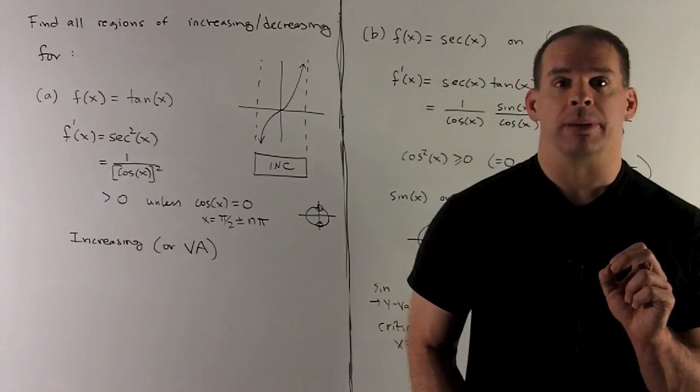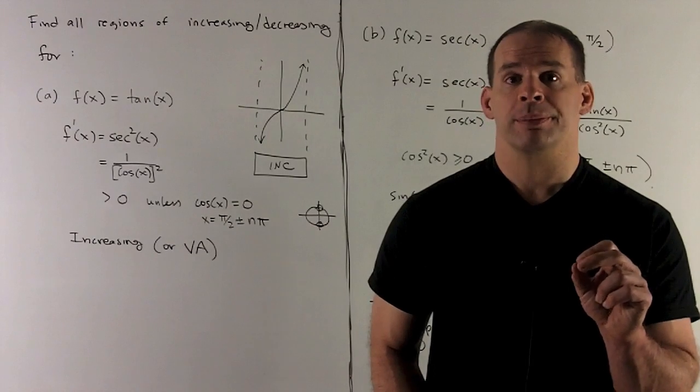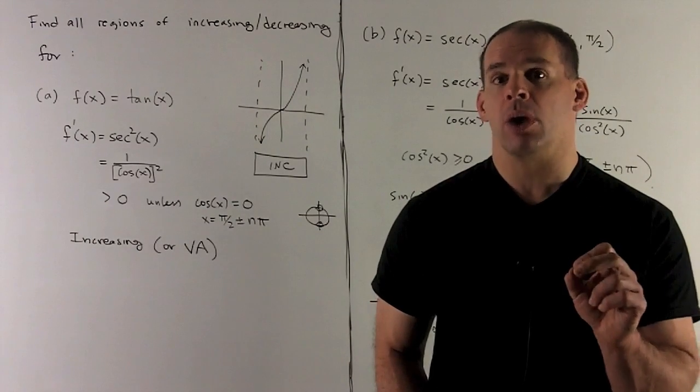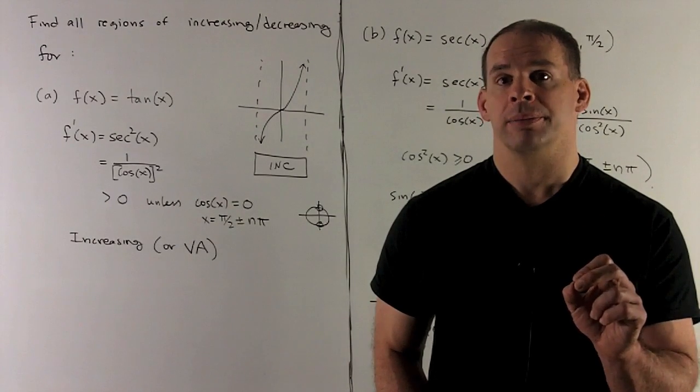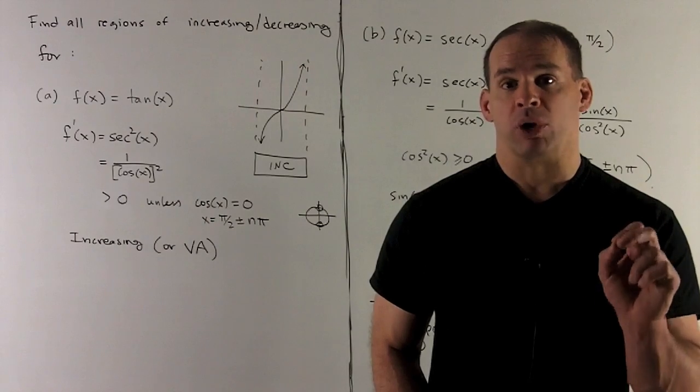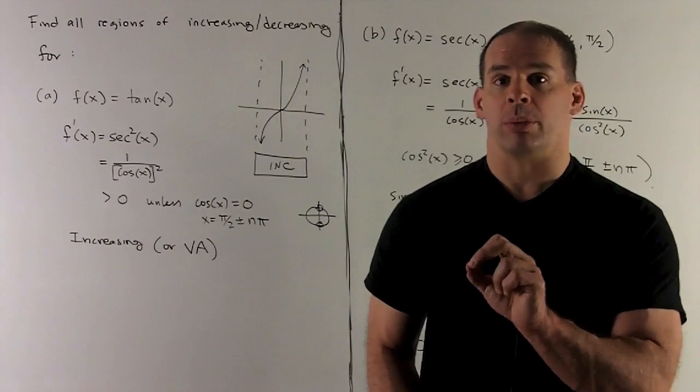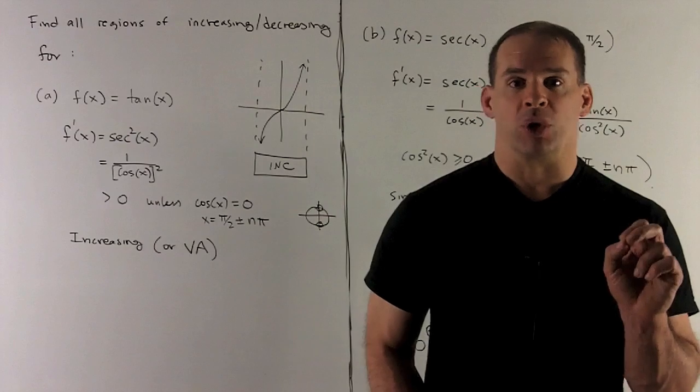What's our procedure going to be? First, I find the critical points. So that's where the derivative is equal to 0 or undefined. I'm going to chop up my real line or my region using those critical points.